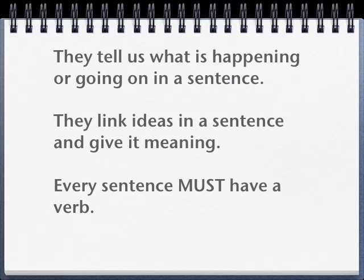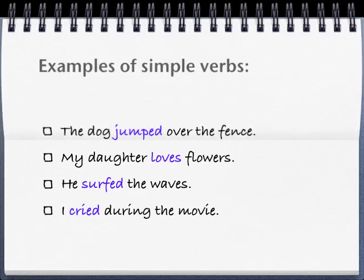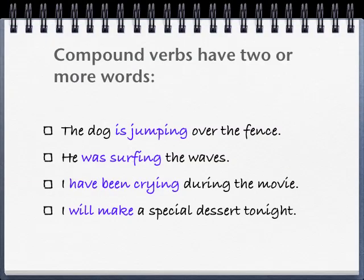Every sentence must have a verb. Even if that sentence only has one word in it, that word must be a verb. Examples of simple verbs would be words like... Compound verbs are a little bit more complex because they have two or more words that work together to form the verb in the sentence.